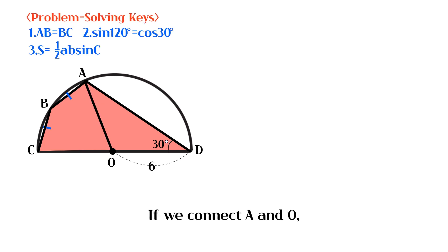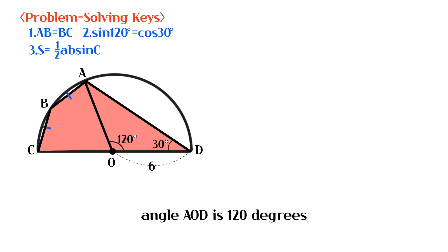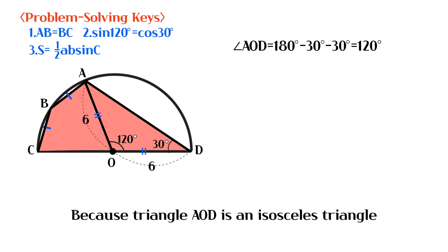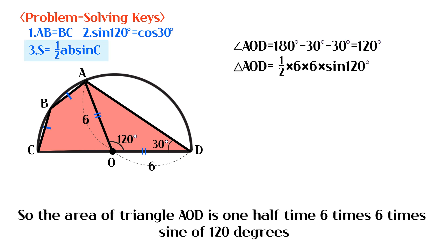If we connect A and O, angle AOD is 120 degrees, because triangle AOD is an isosceles triangle. So the area of triangle AOD is one-half times 6 times 6 times sine of 120 degrees.